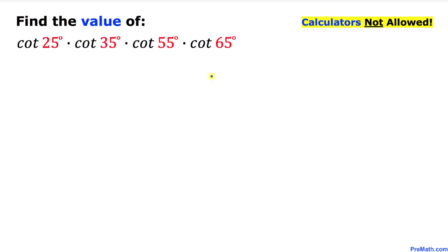Welcome to Pre-Math. In this video tutorial we are going to find the values of these given trigonometric identities. Keep in mind that we are not supposed to be using calculators of any kind. Here is our problem: cotangent of 25 degrees times cotangent of 35 degrees times cotangent of 55 degrees times cotangent of 65 degrees.